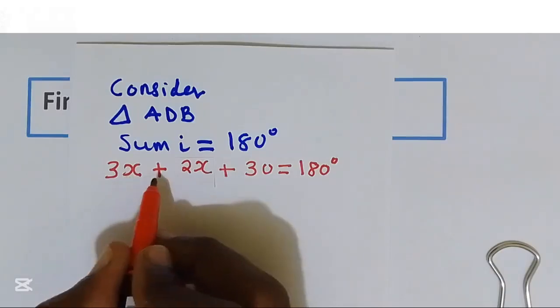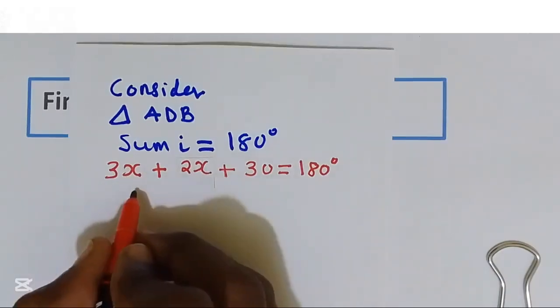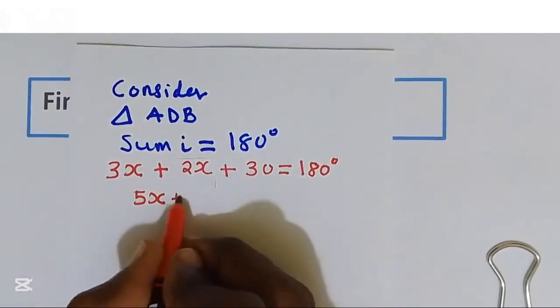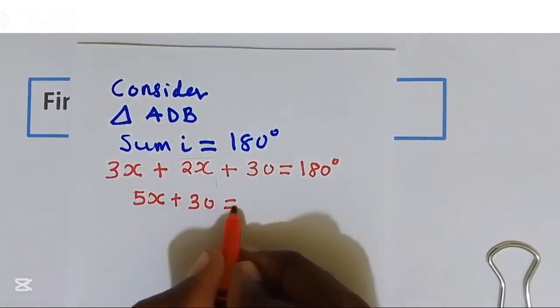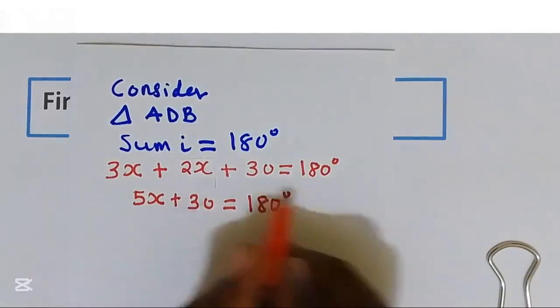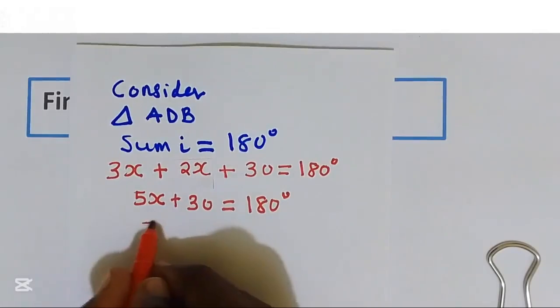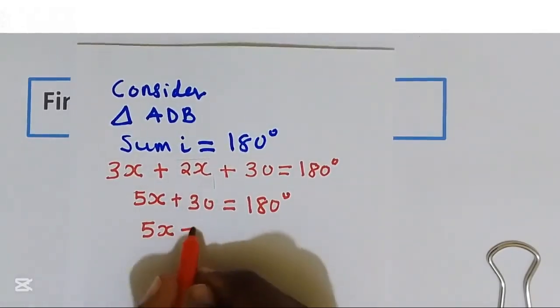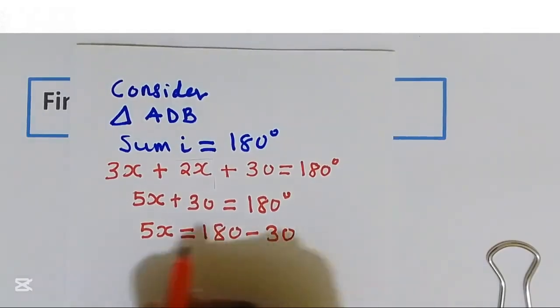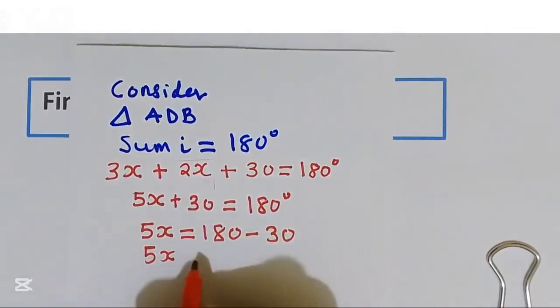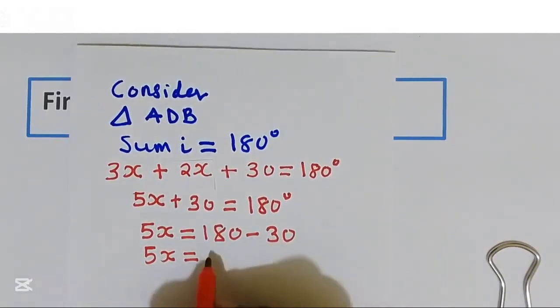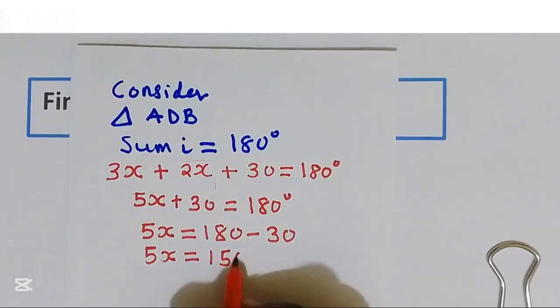3x plus 2x, we got 5x plus 30. This is equal to 180 degrees. I'll take that to the right hand side, that is 5x is equal to 180 take away 30. We got 150 degrees.